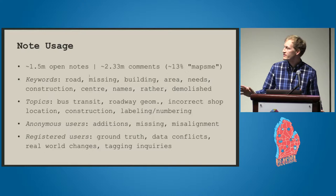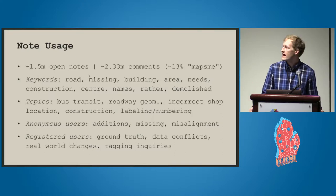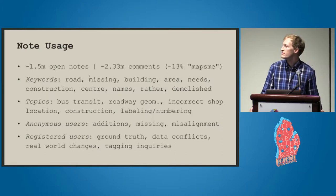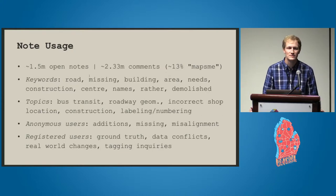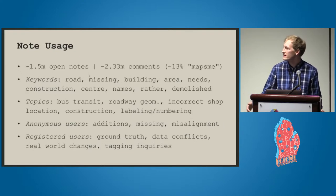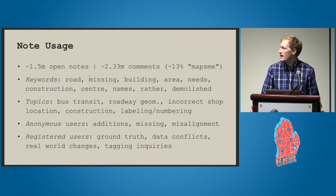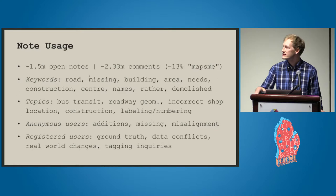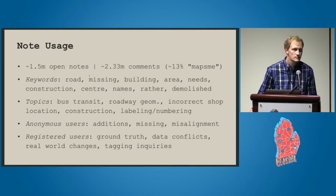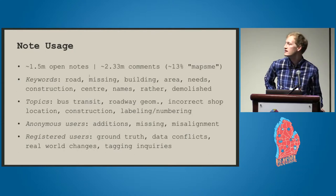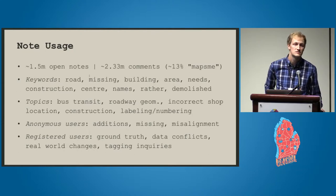I did a little bit of analysis on a 10,000-word English subset and looked at the keywords and some topics. A lot of it is what you would expect — people talk about things that are missing, like roads and buildings. The topics focused on bus transit, roadway geometry, and incorrect shop location. What was a little bit more interesting is the difference between anonymous users and registered users.